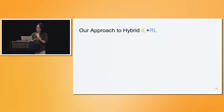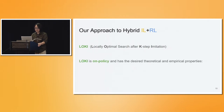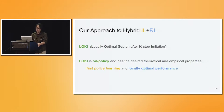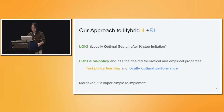In this paper, we propose a very simple approach to combine imitation learning and RL in an on-policy way. It's called LOKI, which stands for Locally Optimal search after K-step Imitation. It's an on-policy method that tackles the covariate shift problem. It has the desired properties: you can learn faster than RL most of the time, learn to outperform the suboptimal expert, and eventually achieve a locally optimal solution. Moreover, it's super simple to implement.